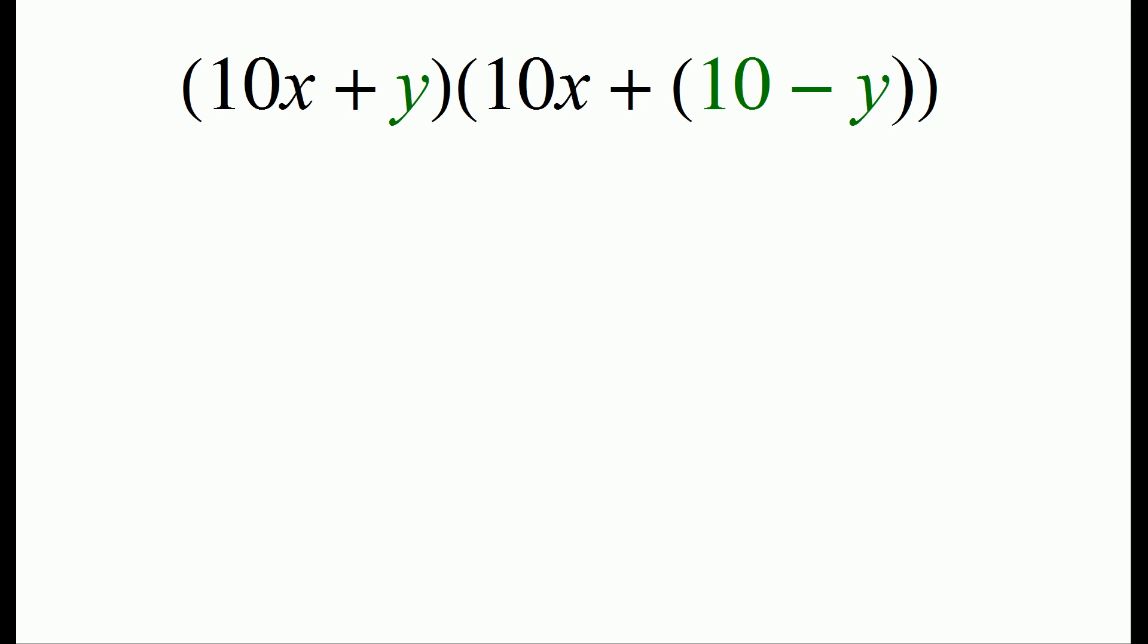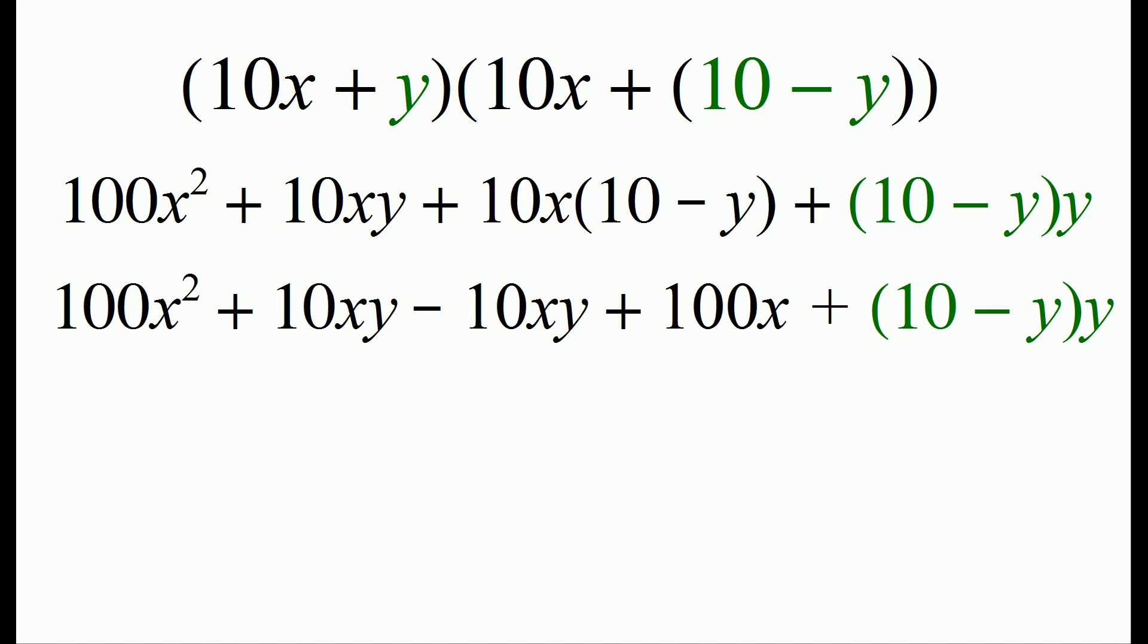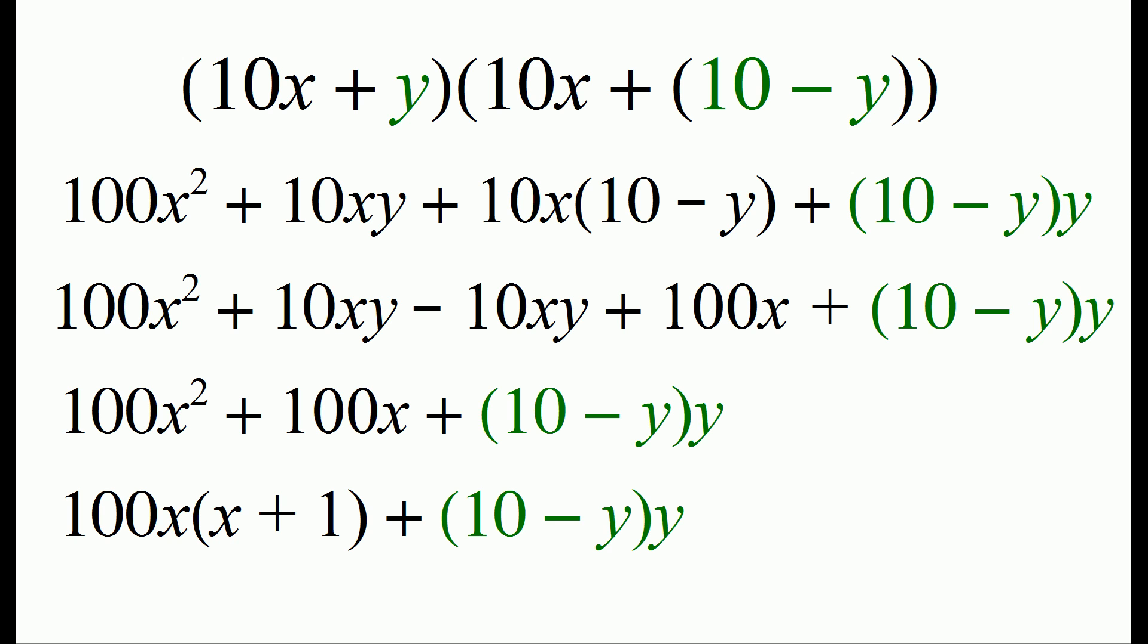So we're going to go through some algebra. We first expand out the product and we end up with several terms, four terms. We then expand out further and now we can see there's some cancellation that can be done. The 10xy minus 10xy cancels out. So we have 100x squared plus 100x plus 10 minus y times y. And that brings us to our answer.